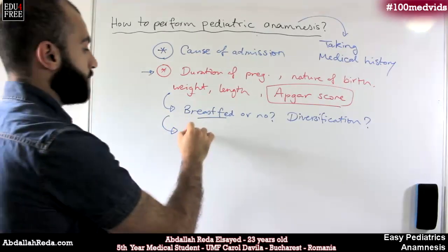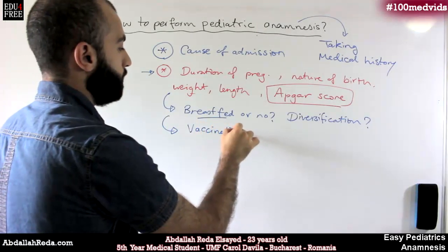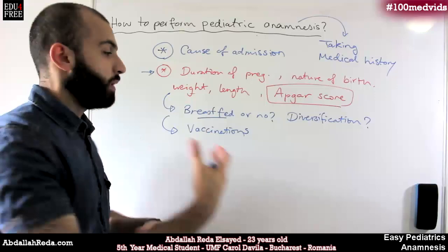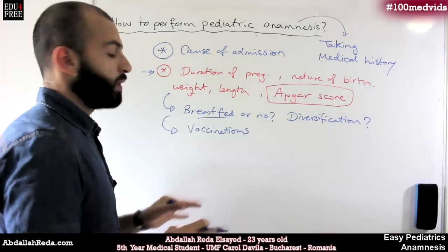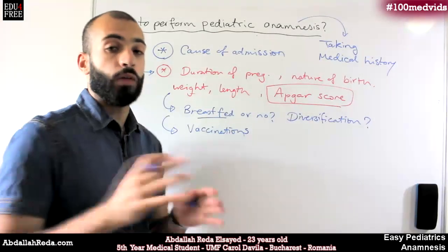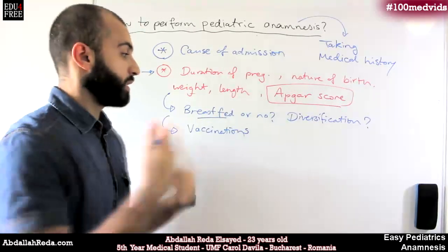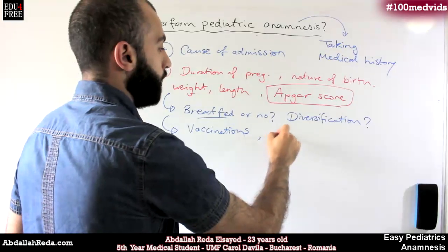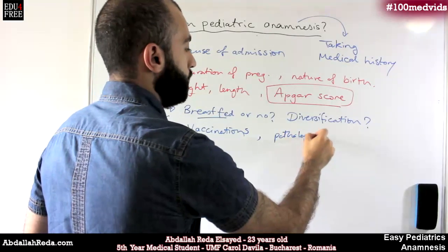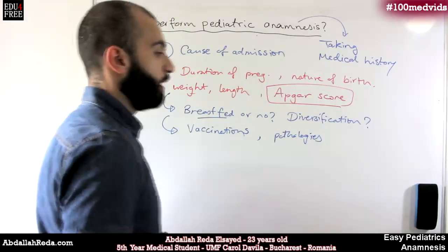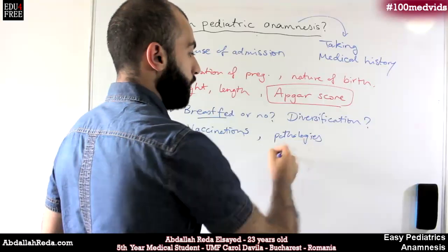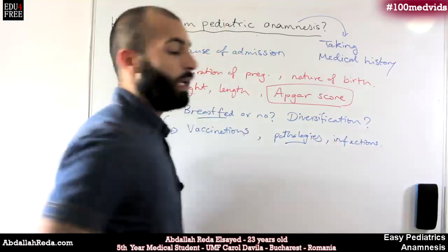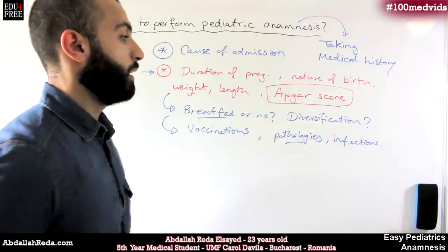Another thing is vaccinations — what vaccinations did the kid have, and whether they were vaccinated according to the Ministry of Health's plan, so that you know what vaccinations they received. You also need to know if the kid had any pathologies before the complaint they are presenting with — infections, fevers, flus, any details — you have to know this if it is there.